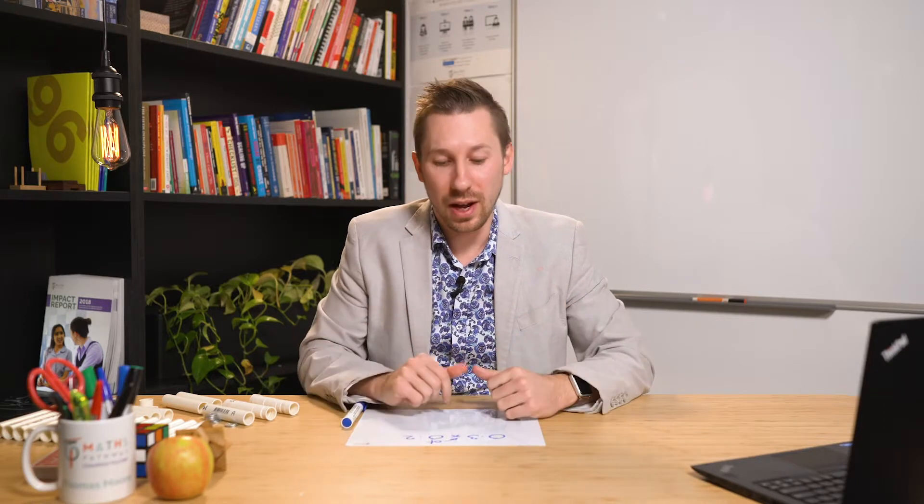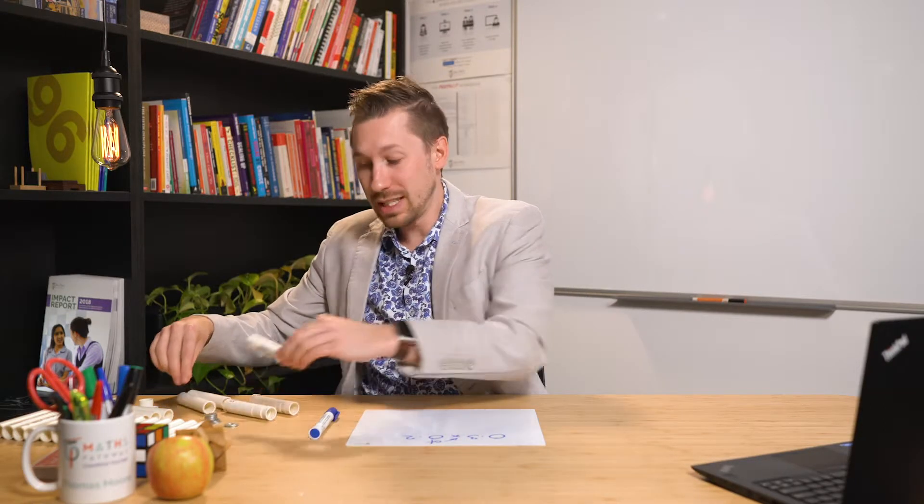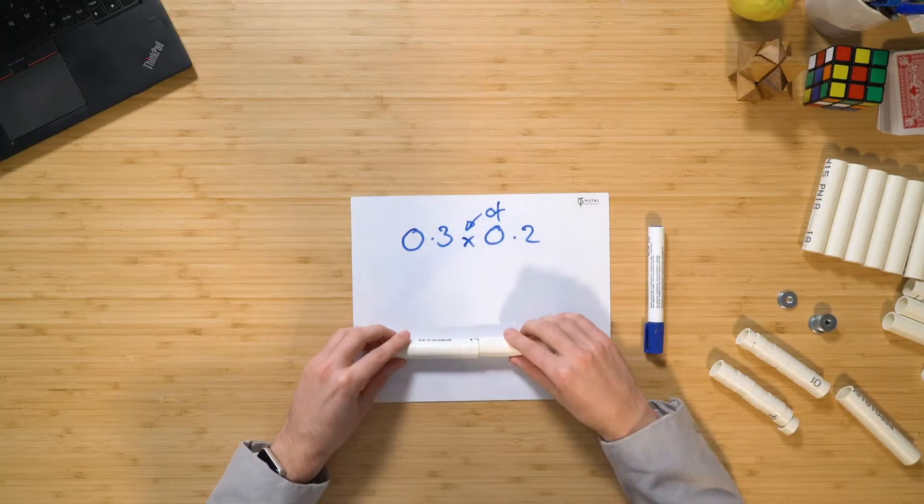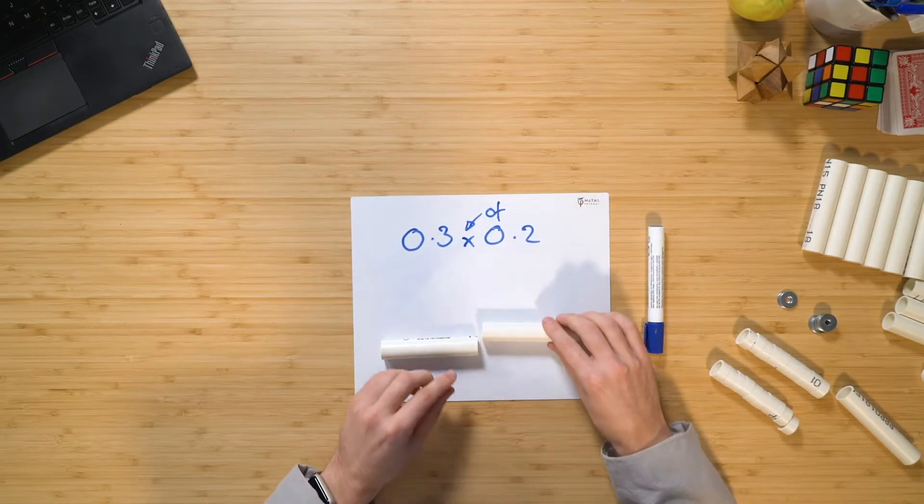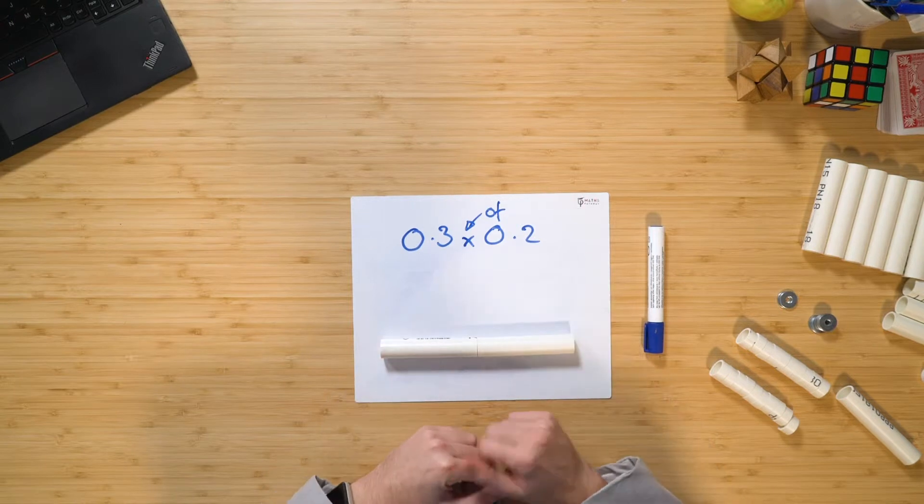So now that we are thinking like this, well, if we think three tenths of two tenths, well, it means that I'm starting off with two tenths. That is two of these and I need to figure out what three tenths of this is.